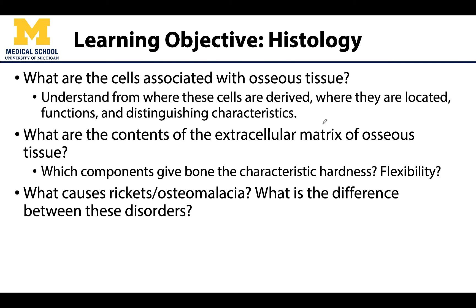We have quite a bit to discuss here, including cells, the extracellular matrix — which is very important in terms of all connective tissues, but certainly in terms of osseous tissue — and we'll even touch on a few pathological areas in the case of rickets and osteomalacia, and how that is going to be affected by changes or issues with the extracellular matrix.